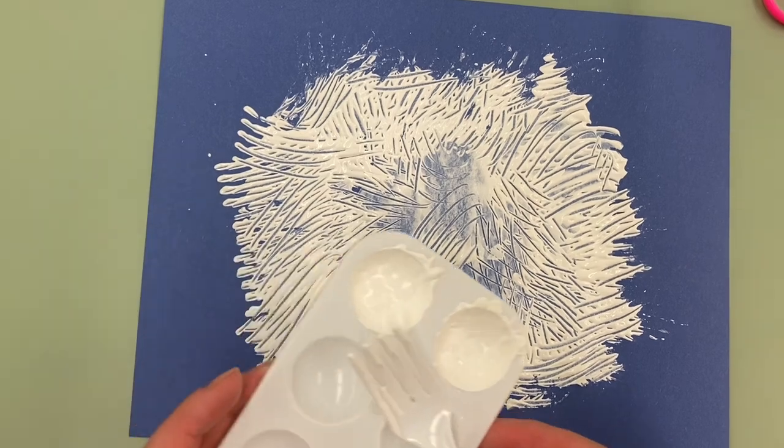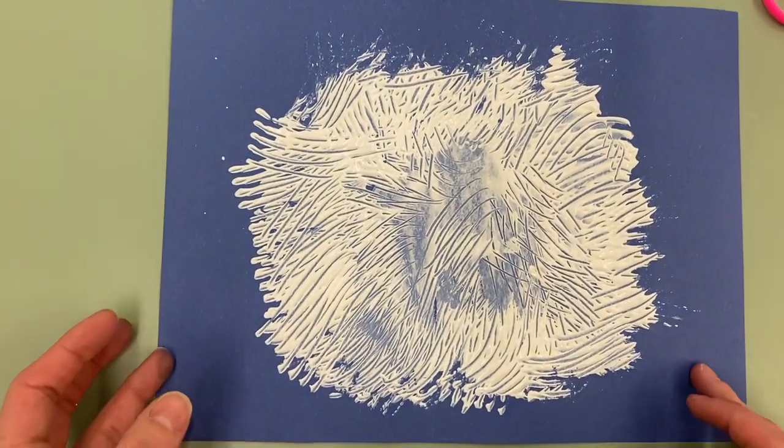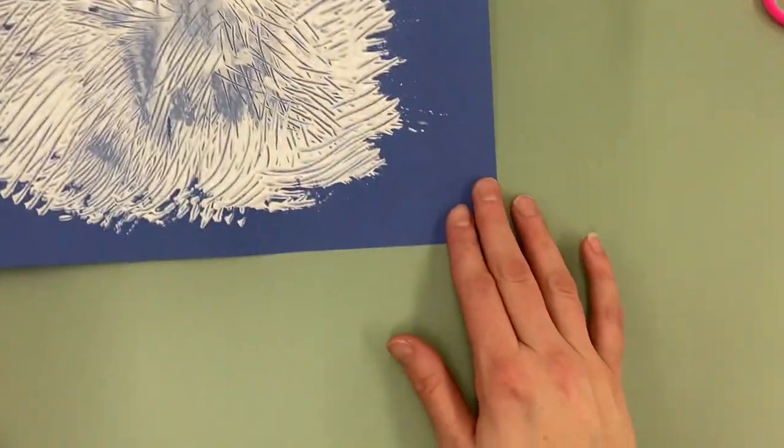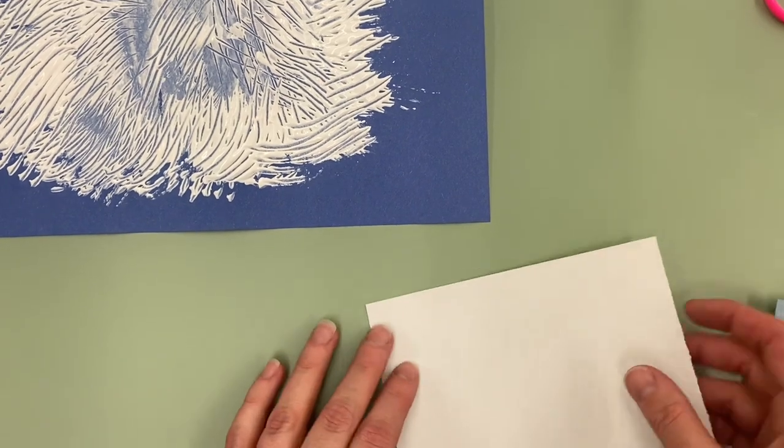Okay, I think I'm gonna let that dry now. So we're gonna set our paint palette and our fork over to the side. We're gonna let that dry and while that's drying we can cut out some shapes for our face. For when that dries we can glue on our polar bear face.